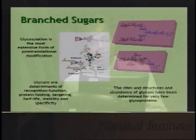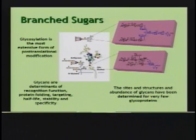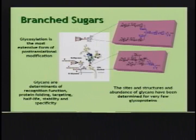There are two broad families of carbohydrates — one which is branched, which I'll summarize now, and the other in the next slide. Building on this, glycosylation is the most extensive form of post-translational modification. These carbohydrates are determinants of recognition function, protein folding, targeting, half-life, stability, and specificity. The question becomes: how do you assemble these? How do you know where proteins are modified? And hence, how will they affect the functional attributes of a protein?